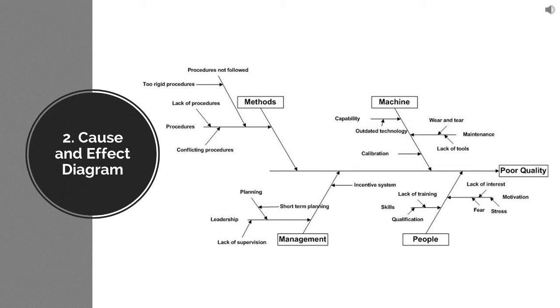Any quality-related problem could happen because of people, machine, method, or management. These are four broad categories I have shown here.